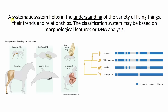The first thing we need to understand is that we need a systematic system to help us in understanding the variety of living things on the planet and their trends and relationships. We need a system for identifying all the creatures and plants on the planet. The classification system is just that, and it may be based on morphological features or DNA analysis.